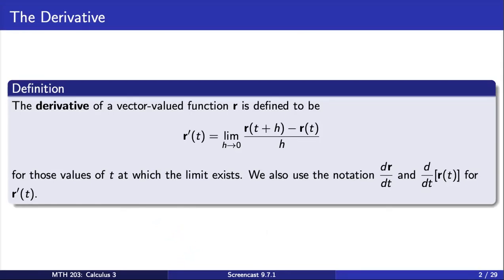In Calculus 1, you are introduced to the limit definition of a derivative. This definition extends naturally to vector-valued functions and curves in space as the limit of the average rate of change of the function, as we have displayed here. Note that we also use the familiar Leibniz notation for the derivative of r.